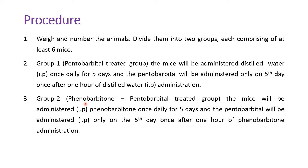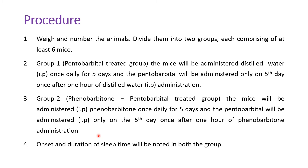Group 2 is the phenobarbital plus pentobarbital treated group. The mice will be administered phenobarbital intraperitoneally once daily for 5 days, and pentobarbital will be administered intraperitoneally only on the 5th day, once, after 1 hour of phenobarbital administration. Onset and duration of sleep will be noted in both groups.